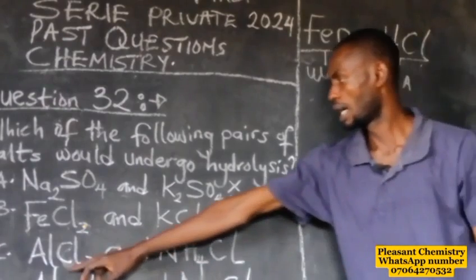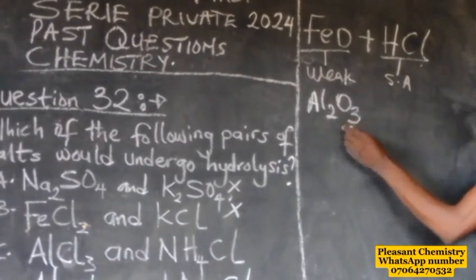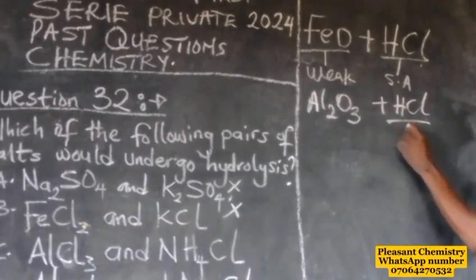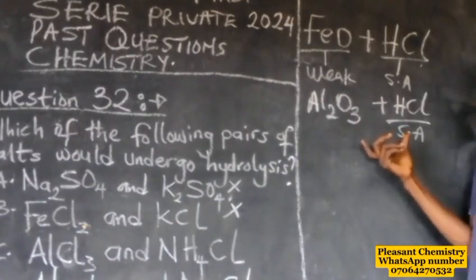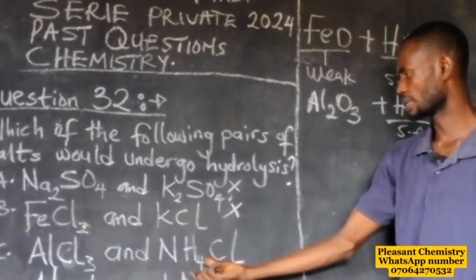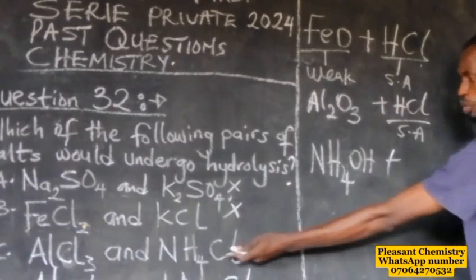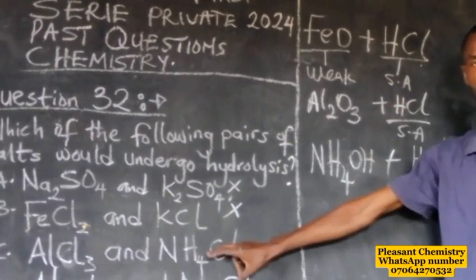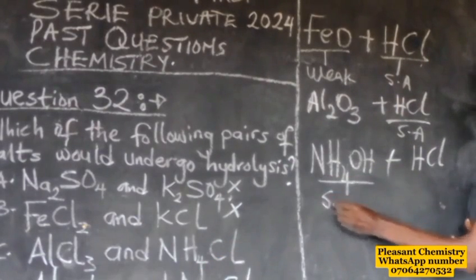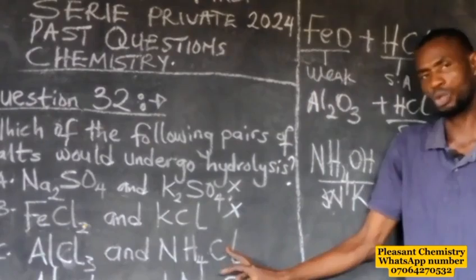The third pair: aluminium chloride and ammonium chloride. Aluminium chloride will undergo hydrolysis because Al₂O₃ is a weak base and HCl is a strong acid. Ammonium chloride will also undergo hydrolysis because it forms ammonium hydroxide, which is a weak base, combined with HCl, a strong acid. Both salts in this pair undergo hydrolysis.